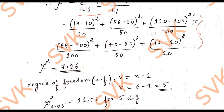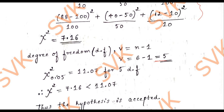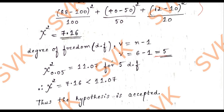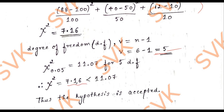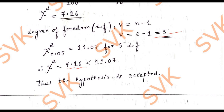Since the problem uses binomial distribution, the degree of freedom is given by ν = n - 1. The number of data values is 6, so degrees of freedom = 6 - 1 = 5. From the chi-square table at 5% level of significance for 5 degrees of freedom, the critical value is 11.07. Since our calculated value 7.16 is less than 11.07, the hypothesis is accepted at 5% level of significance.